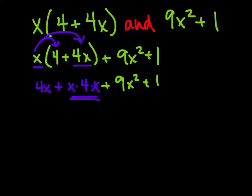If I look at x times 4 times x, I have two x's there. So I can rewrite that as 4x² because they're being multiplied. And I have my initial 4x. And we still have our 9x² + 1.